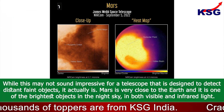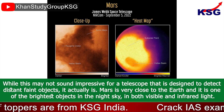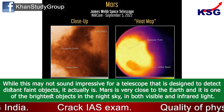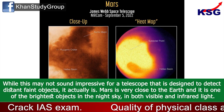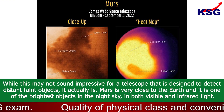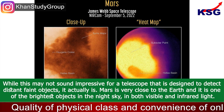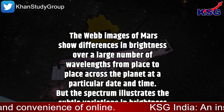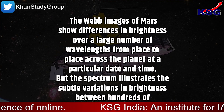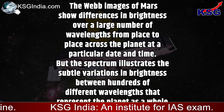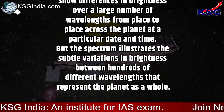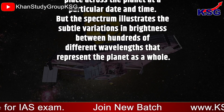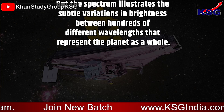While this may not sound impressive for a telescope designed to detect distant faint objects, it actually is. Mars is very close to the Earth and it is one of the brightest objects in the night sky, in both visible and infrared light. The Webb images of Mars show differences in brightness over a large number of wavelengths from place to place across the planet at a particular date and time. But the spectrum illustrates the subtle variations in brightness between hundreds of different wavelengths that represent the planet as a whole.